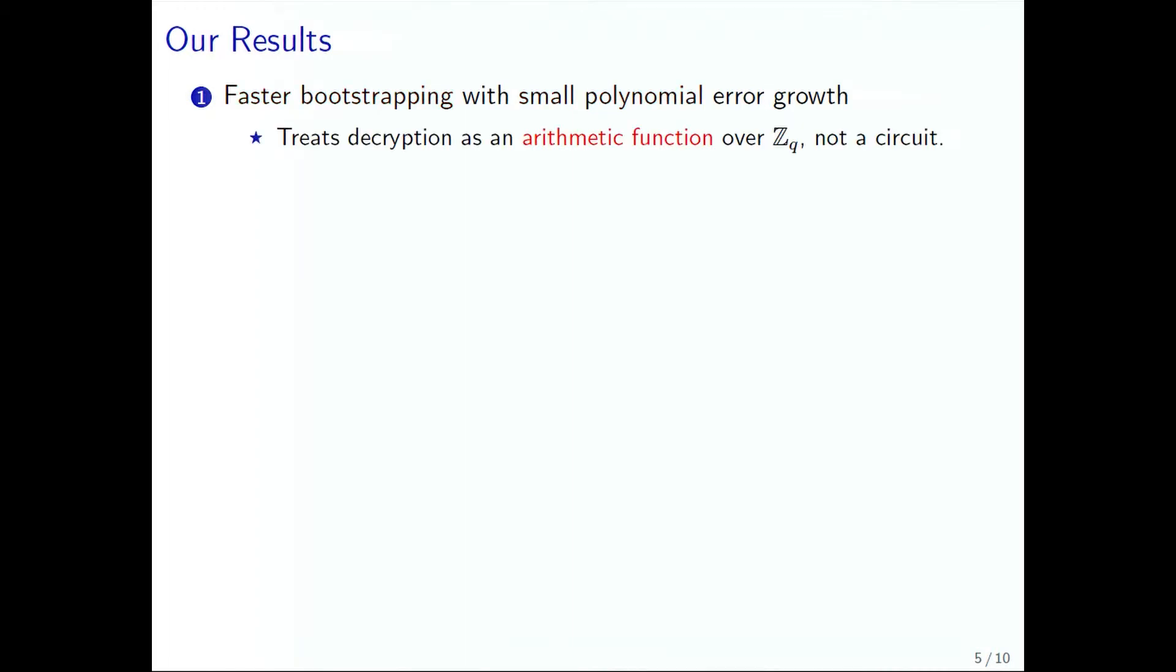The way we do this is by treating decryption as an arithmetic function over Z_q instead of as a binary circuit. By doing so, we avoid Barrington's theorem, but we do still use permutation matrices. Our main idea is that we embed the additive group Z_q under addition into a small symmetric group.